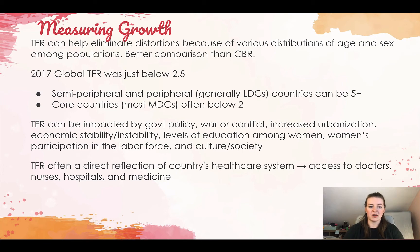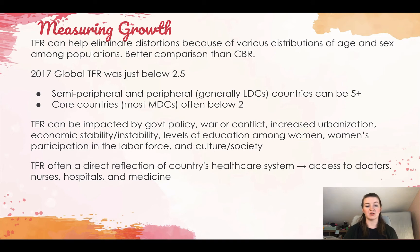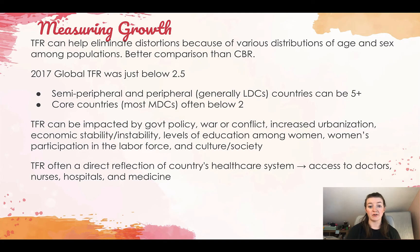TFR also directly reflects a country's healthcare system. If people have access to doctors, nurses, hospitals, and medicine, TFR is most likely lower. A woman is more likely to receive prenatal care and contraception, and to be healthier overall, leading to fewer children. If a woman is healthier, she is more valued in society, seen less as a baby maker and more as a valuable human being. Her children are also probably healthier.